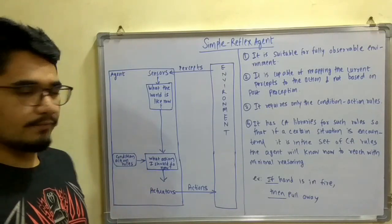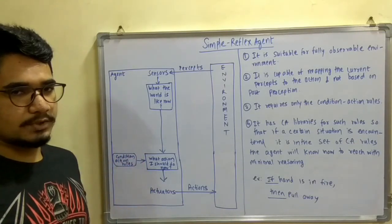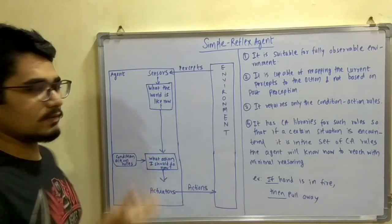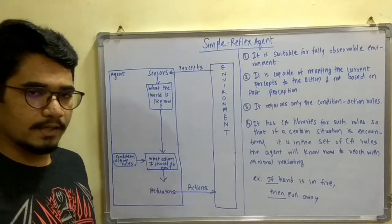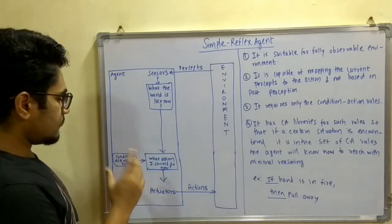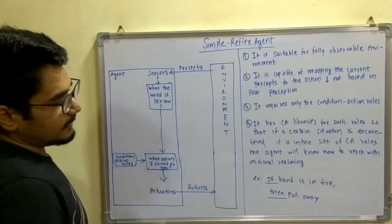So for that, you need to provide a driving support for that, which is basically condition action rules. It is called CA rules. There are many kinds of CA libraries in designing an agent. One of those CA rules, for example, is the if-then CA rule.